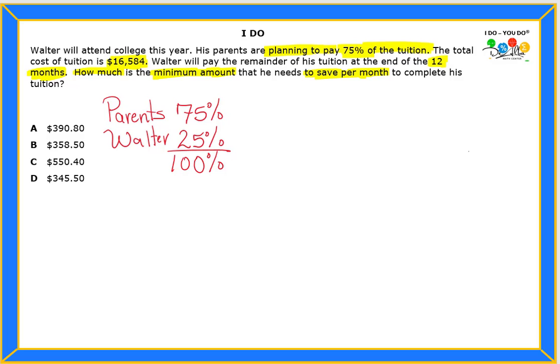So, instead of finding 75%, I say, let's find 25%, because that way I'll find out how much Walter actually needs to pay for tuition. So, to find that 25%, we're gonna change the 25% to a decimal, so that'll be equals to 0.25.